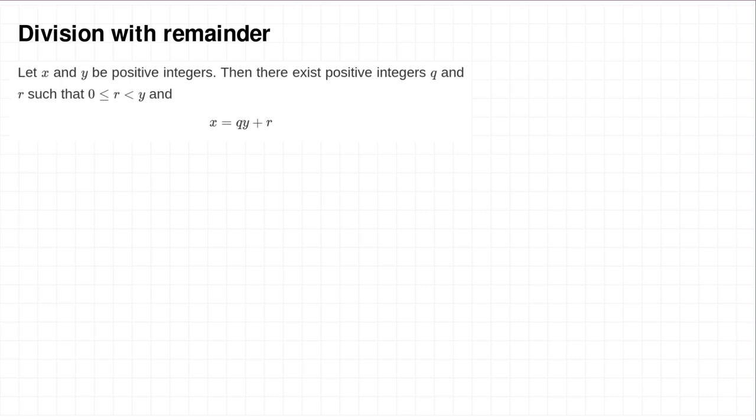I'm going to begin with a reminder of division with remainder. So if we have two positive integers x and y, then division with remainder is the following statement. It says that there exist positive integers q and r, such that x is q times y plus r, and r is greater than or equal to 0 but less than y. So what's going on here is you try and divide x by y, and you get a quotient q and a remainder r. When you divide by y, the remainder is always less than y. So, for example, if you want to divide 17 by 5,